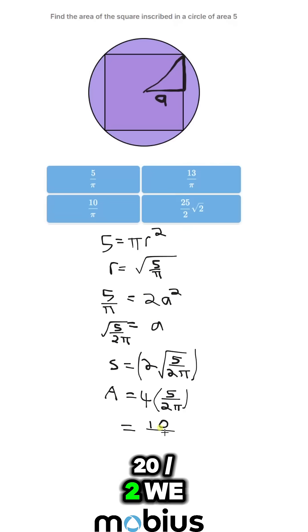We simplify that down. 4 times 5 is 20 divided by 2. We get 10 over pi as our area.